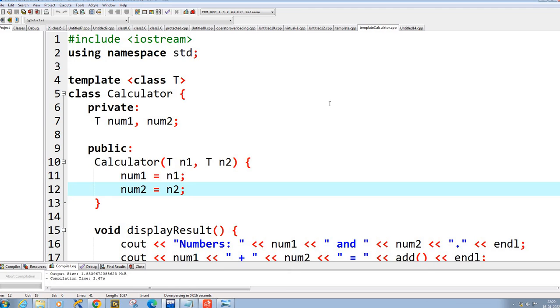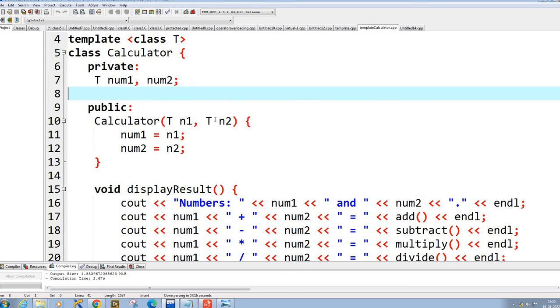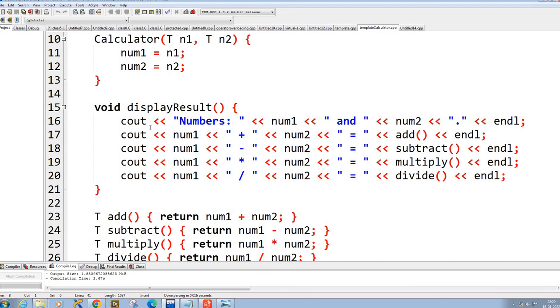One of the good examples of this is actually a template calculator which you can find in most of the places in the internet. That is like you want to create a calculator like this, let's say class calculator. There are two numbers and you have to display the result of adding, subtracting, multiplying, etc.